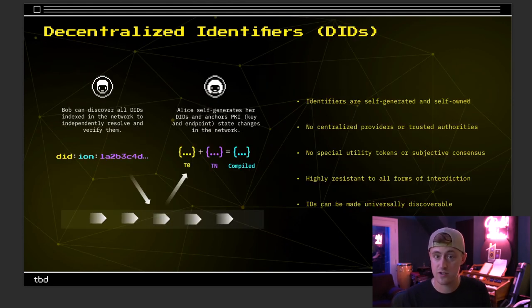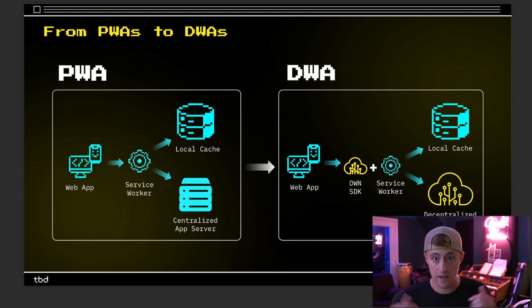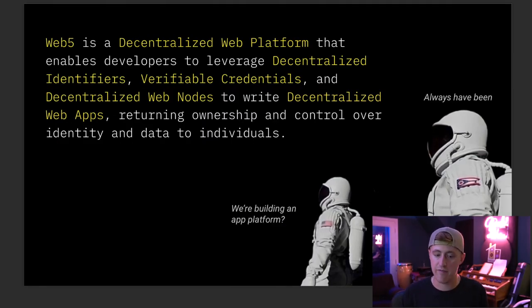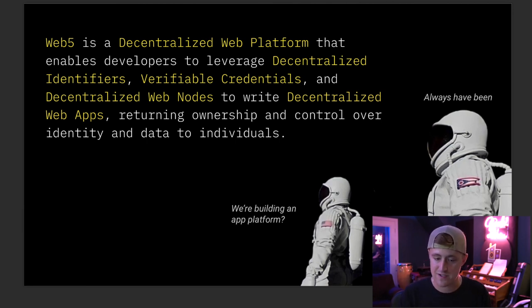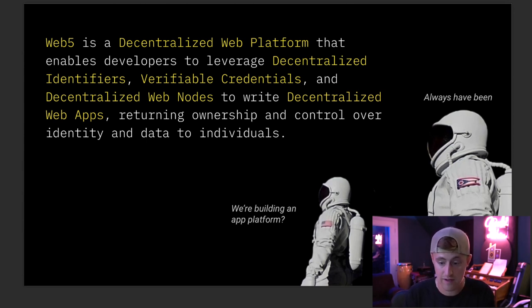These next few slides go way more in-depth about these three pillars, explaining their utility and the technology behind them. I'll definitely link this PDF in the description below so you guys can go through and read all that. But once again, as he wraps things up, he says Web 5 is a decentralized Web platform that enables developers to leverage decentralized identifiers, verifiable credentials, and decentralized Web nodes to write decentralized Web apps, returning ownership and control over identity and data to individuals.